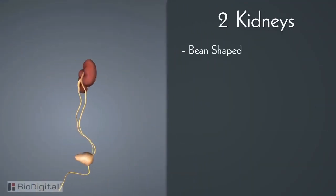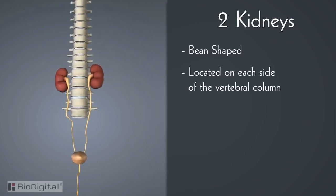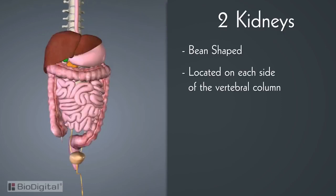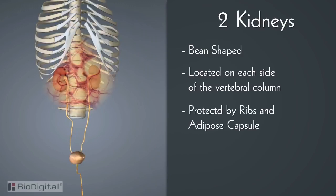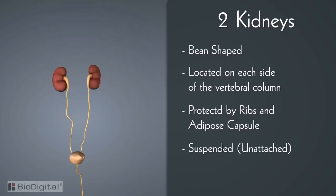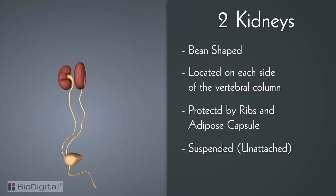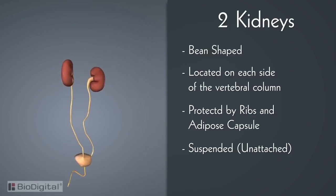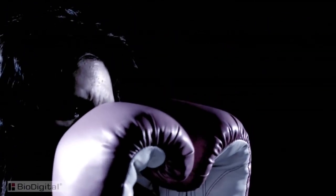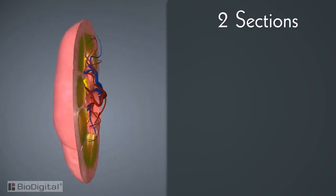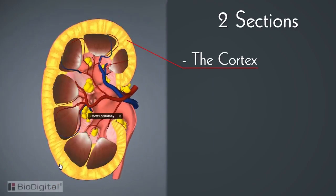The two kidneys are bean-shaped in appearance. They are located on either side of the vertebral column, behind the upper part of the abdominal cavity. The kidneys are protected by the ribs and a heavy cushion of fat called the adipose capsule. They are literally suspended in the body, meaning unattached to any other major organ — they pretty much stay up by themselves, and for this reason, kidney punching in boxing is illegal.